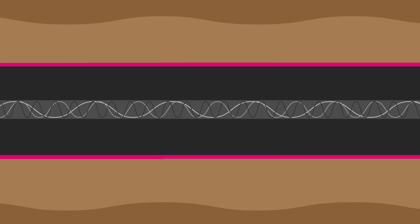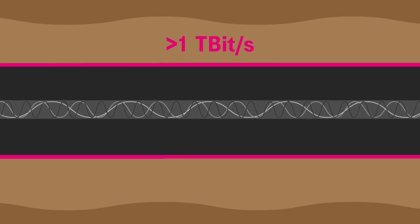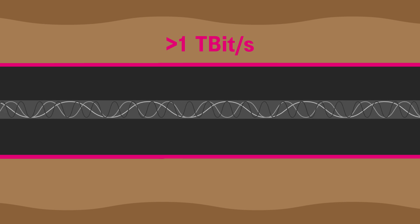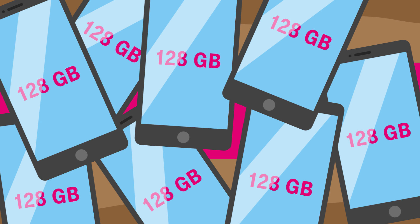Glass fibre makes parallel big data transfer possible at the speed of one terabyte per second. This is the data volume of eight smartphones with 128 gigabytes of internal storage.